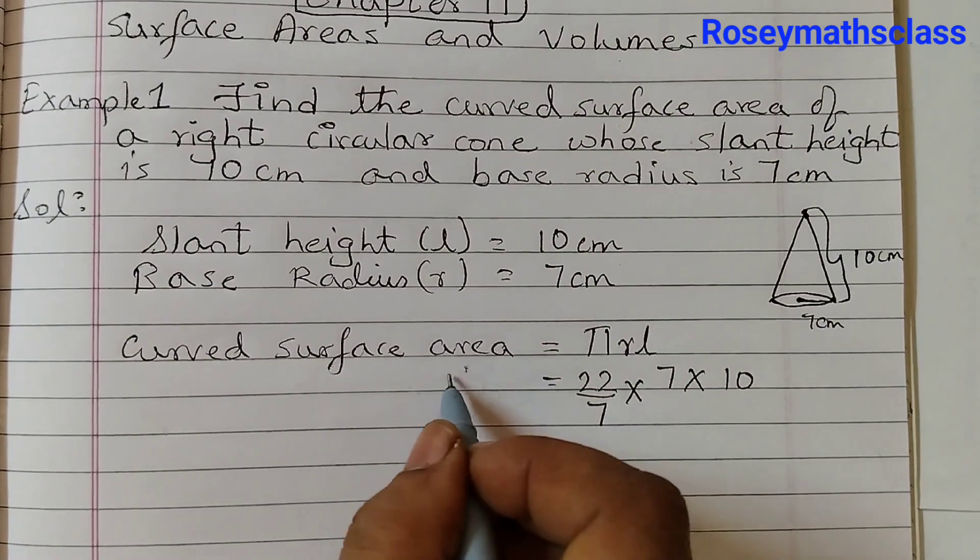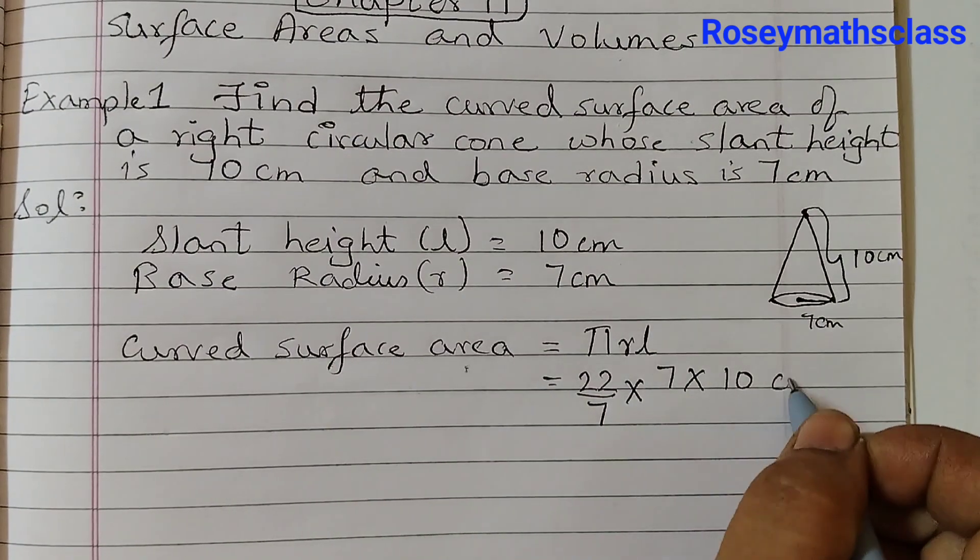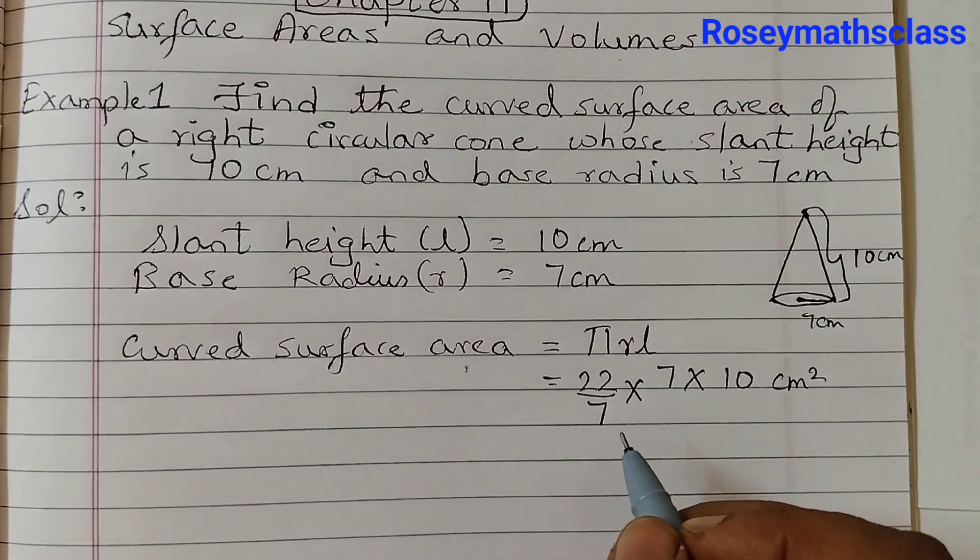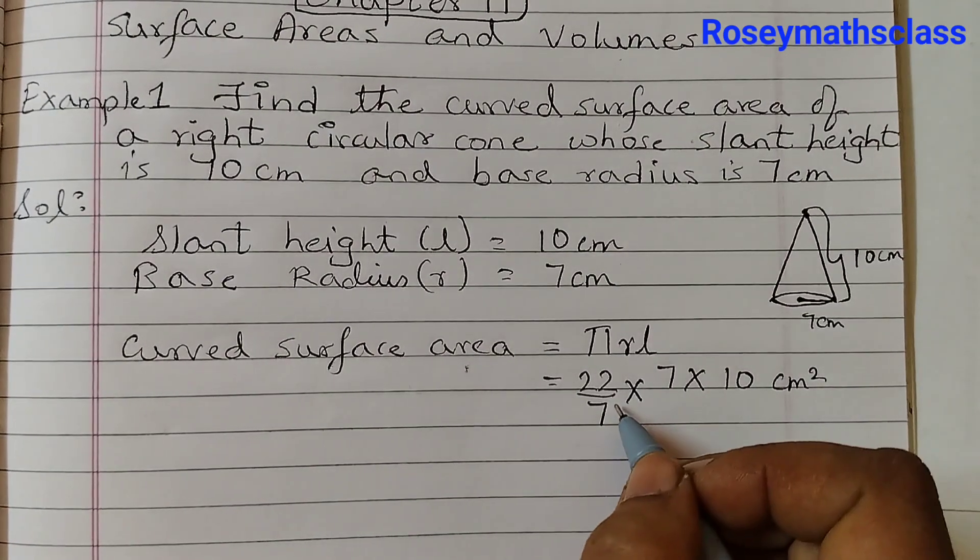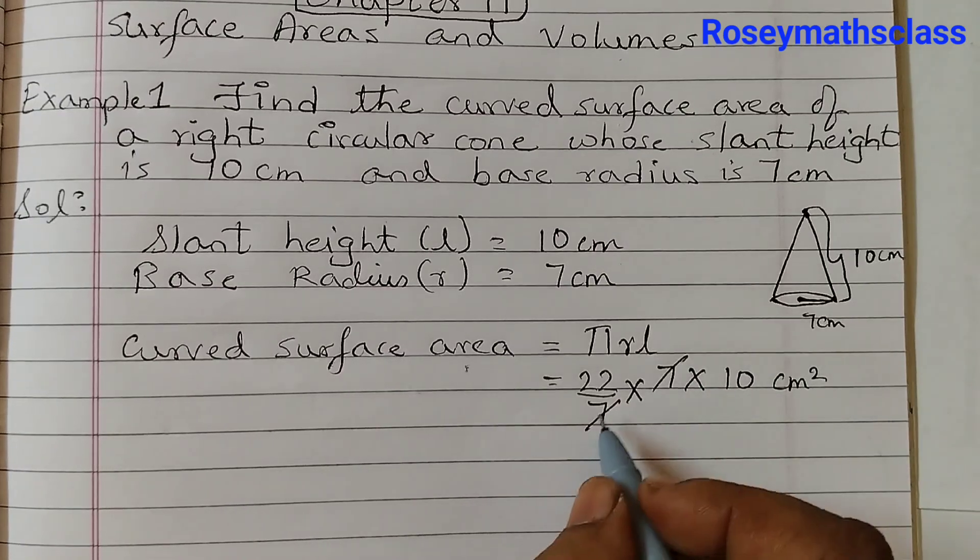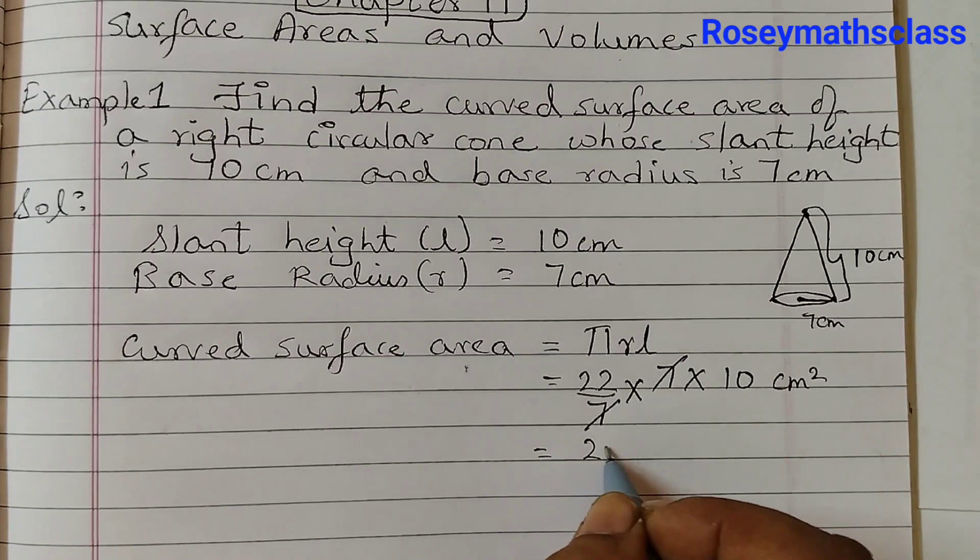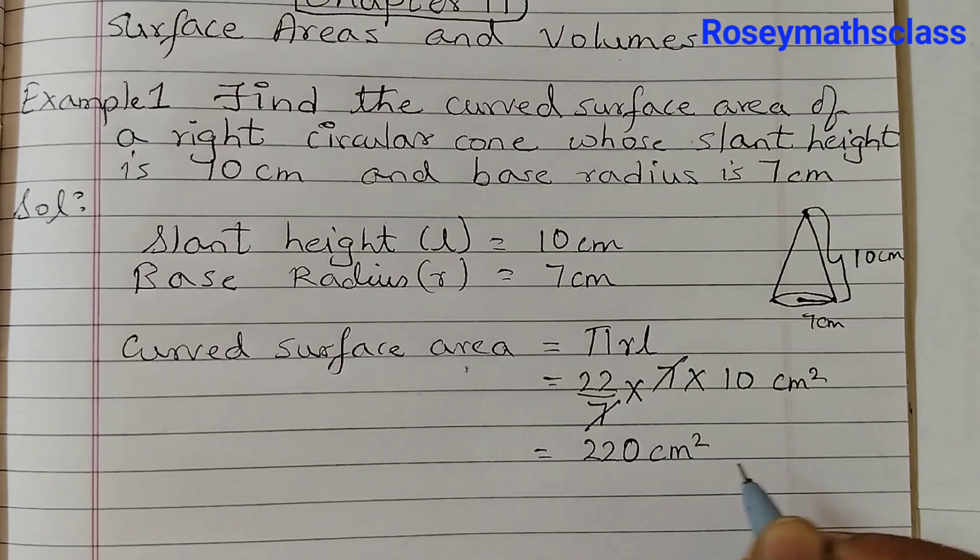And this is area, so the unit would be cm squared. Now cancel out—7 cancels with 7. 22 into 10 is 220 square cm.